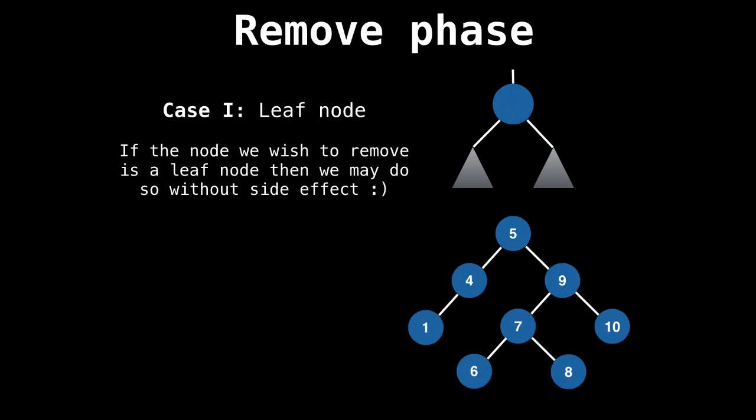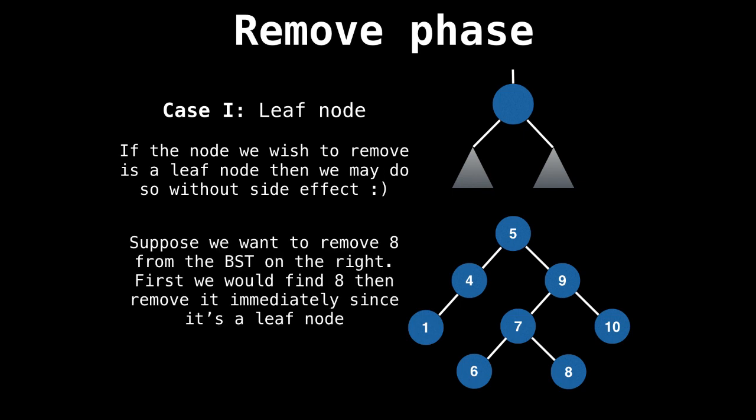In the first case, where the node to remove is a leaf node, we can simply remove it without any side effects. The successor node in this case would be simply a null node. Suppose we want to remove node 8 from this tree. We find where 8 is in the tree, go down the tree, and find node 8. We discover it's a leaf node, so we can just remove it.